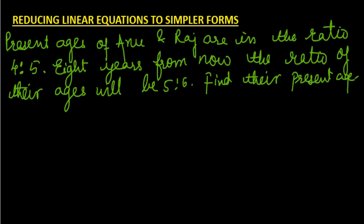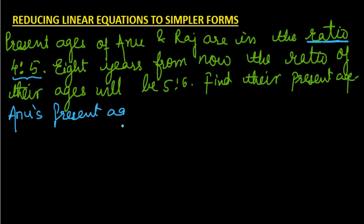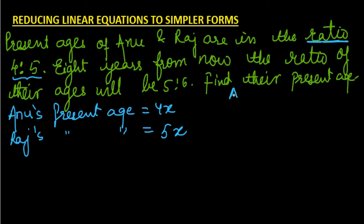It is assumed you know what ratios are from grades 6 and 7. Since the ratio of the present ages is 4:5, let Anu's present age be 4x and Raj's present age be 5x. After 8 years, Anu's age becomes 4x + 8 and Raj's age becomes 5x + 8.